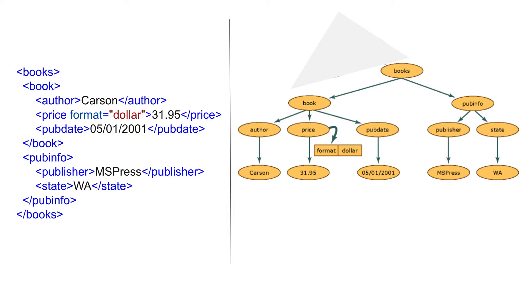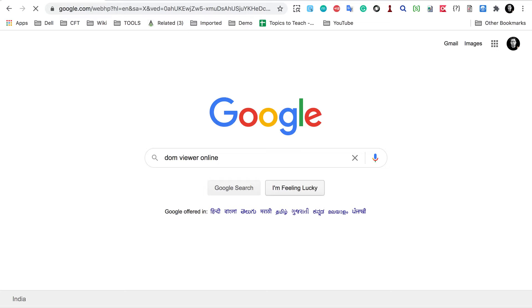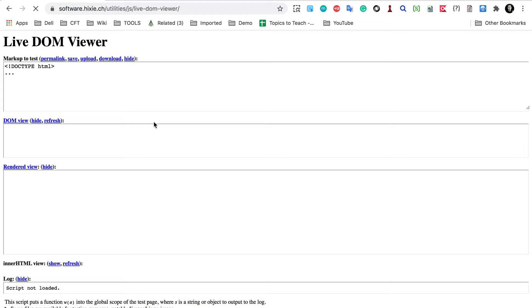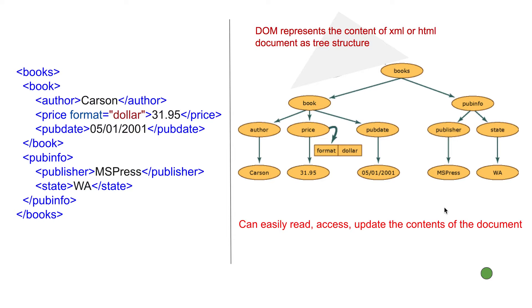This is exactly what DOM does. DOM represents the content of an XML or HTML document as a tree structure. DOM is a programming interface or an API, and this API can be used with any programming language — most commonly JavaScript. Using DOM we can easily read, access, and update the contents of the document. Let me show you an example — I'll go to Google, search for a DOM viewer online, and in this live DOM viewer, if I give it my XML, you can see it has converted it into a tree structure. DOM does this conversion internally in memory.